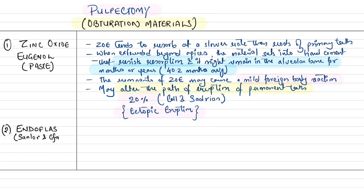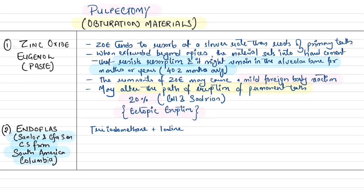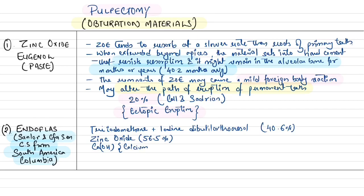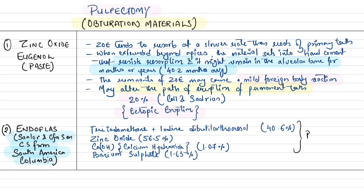The second material is Endoflas from Colombia (South America), which contains: triidomethane plus iodine, dibutyl ortho cresol 40.6%, zinc oxide 56.5%, calcium hydroxide 1.07%, and barium sulfate 1.63% as powder components. The liquid contains eugenol and para-monochlorophenol.